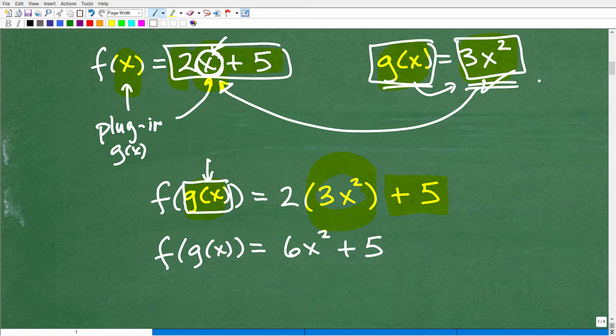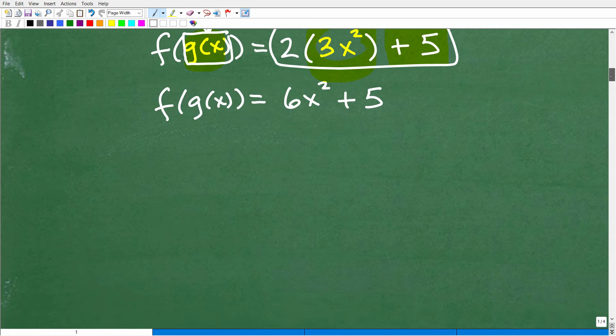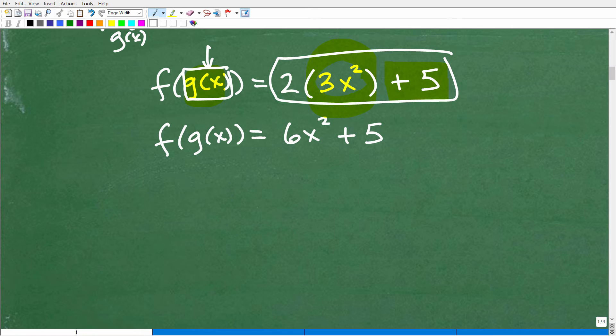We just plugged in the g of x function, which is 3x squared. So once we have that down, that is f of g of x. Now what we need to do is simplify this and we will be done. So that's just simply 2 times 3x squared, which is 6x squared plus 5. And there you go. That is f of g of x, a composite function or function composite.